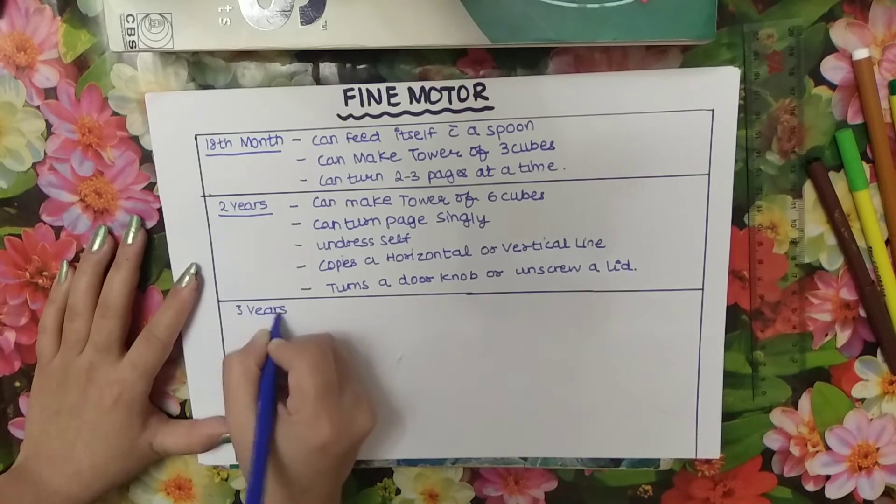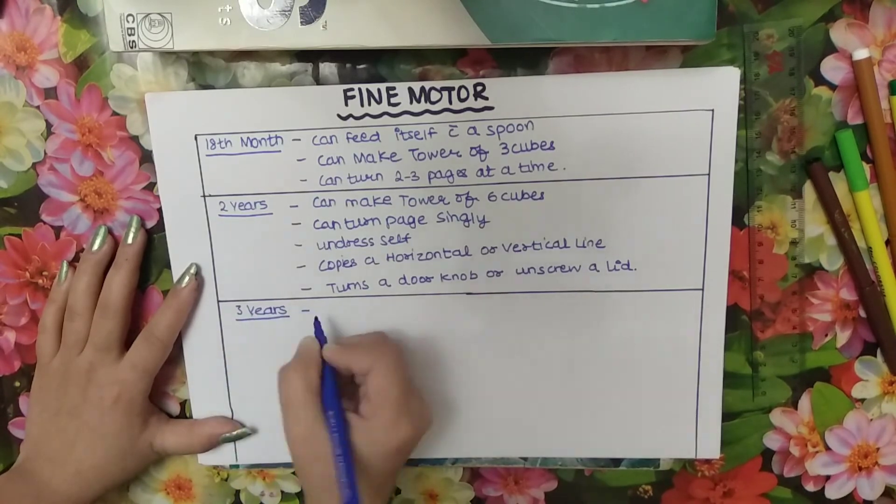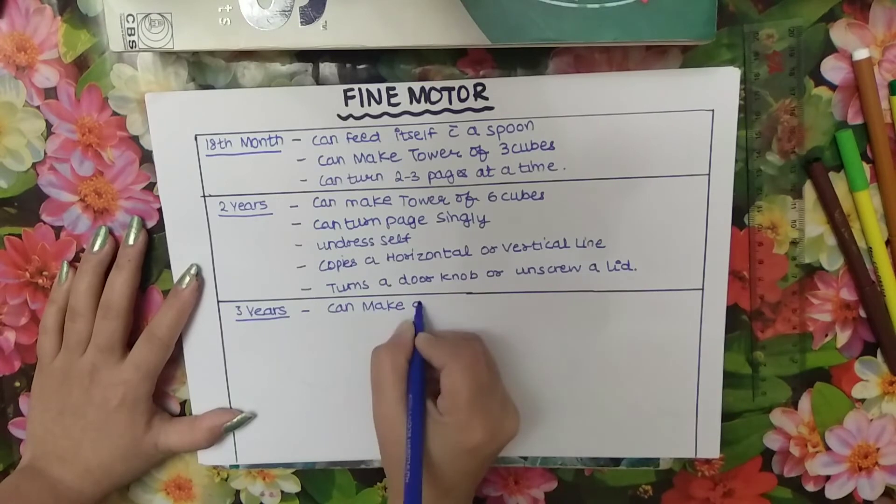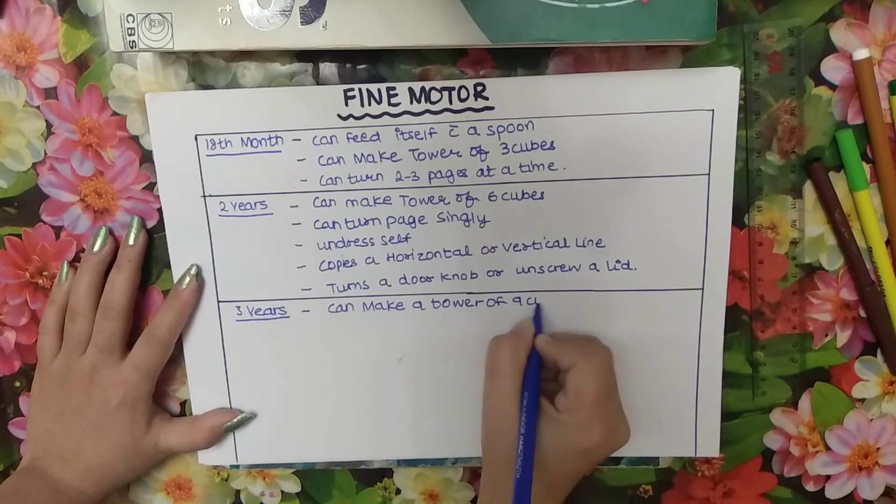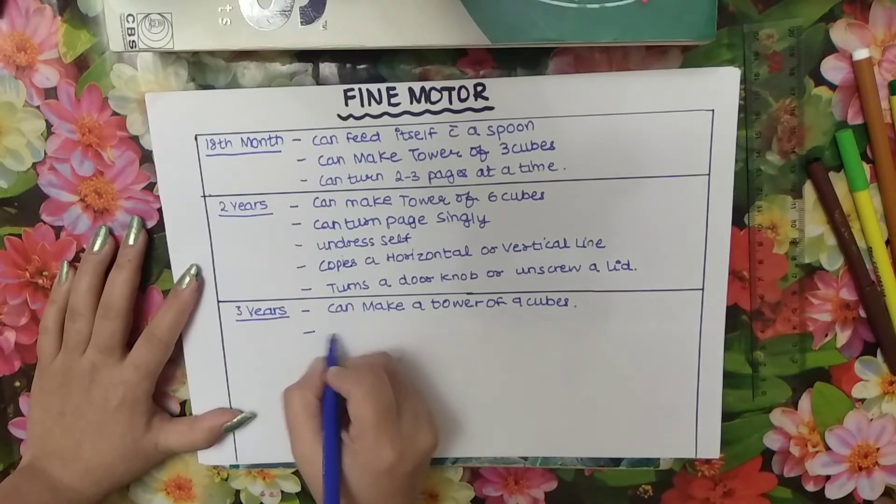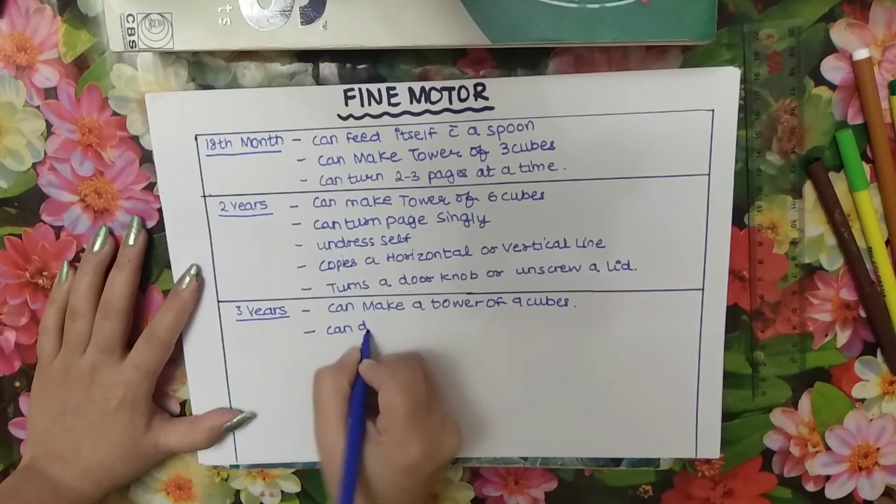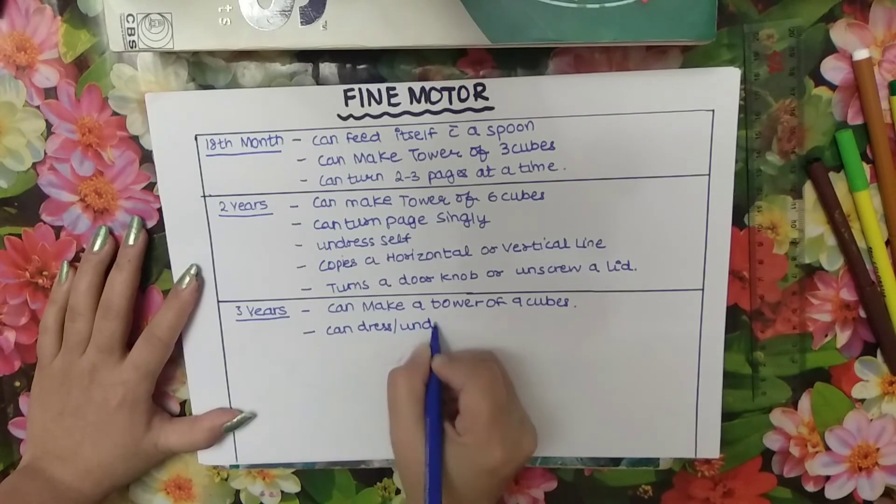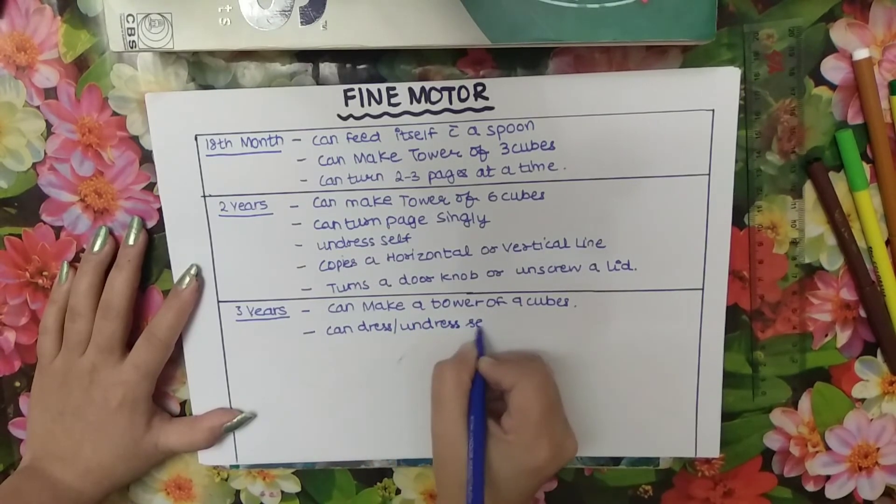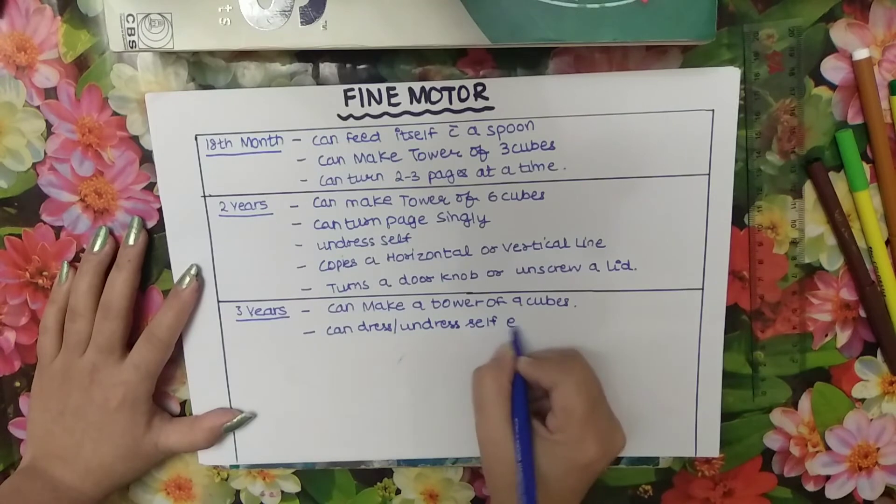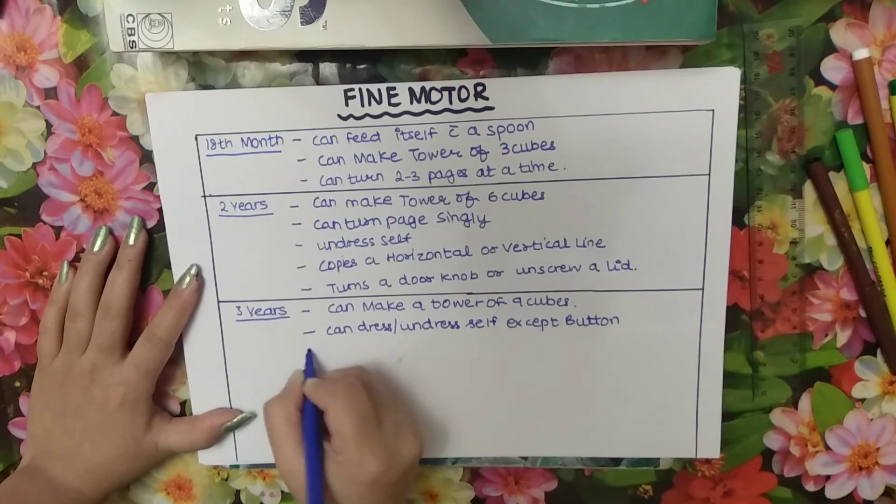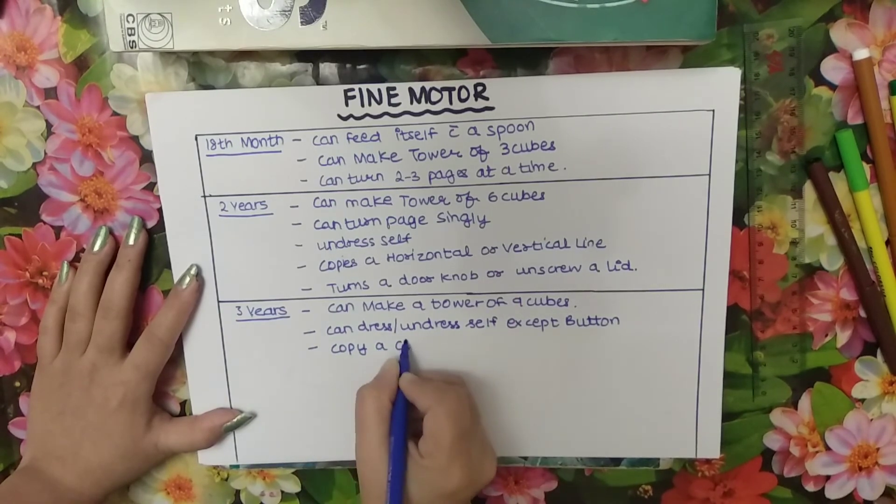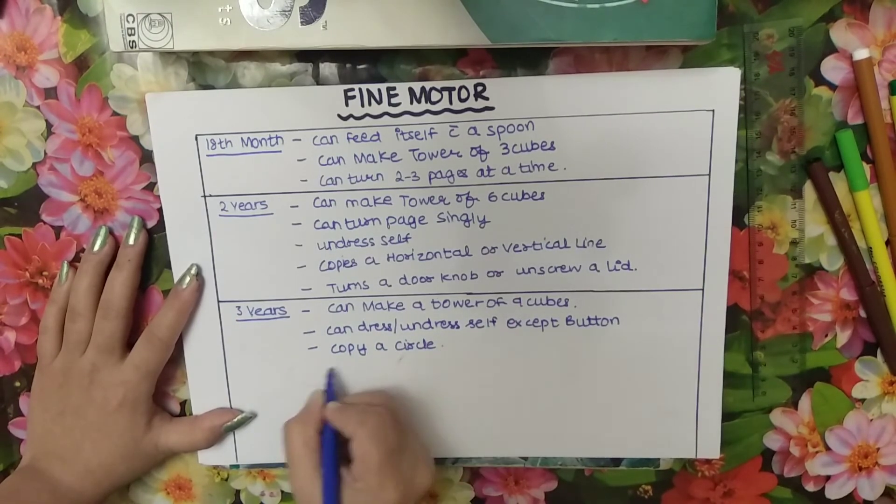Three years baby can make a tower of nine cubes. Three years baby can dress undress self except button. Three year baby can copy a circle. Three year baby handedness get established.